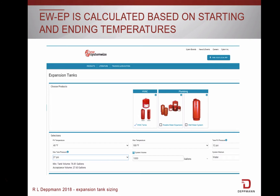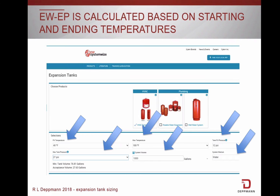When sizing an expansion tank, you will need the following information: fill temperature, maximum temperature, fill pressure, maximum pressure, volume from your design, and the type of fluid in the system. In a compression tank, the initial pressure is atmospheric. In a bladder or diaphragm expansion tank, the initial pressure is the same as the fill pressure.